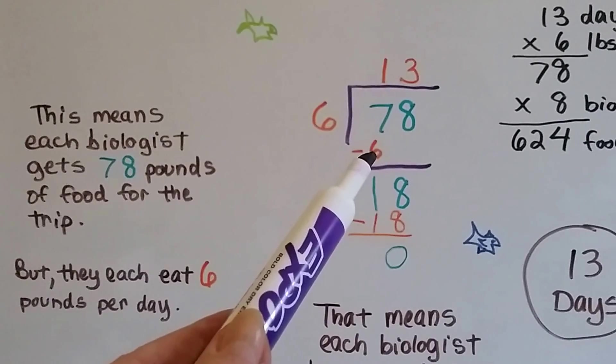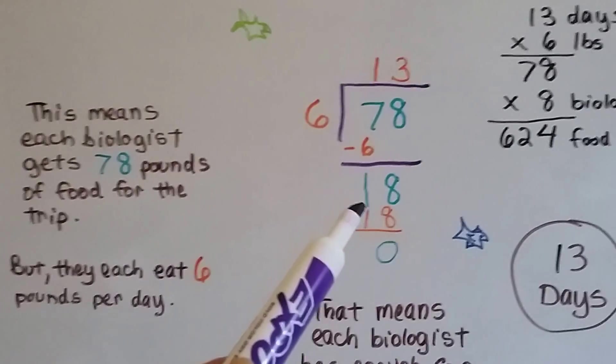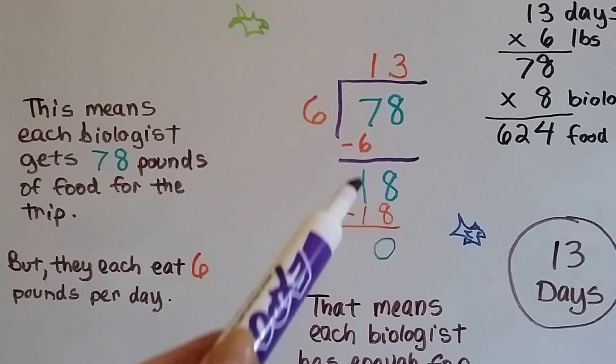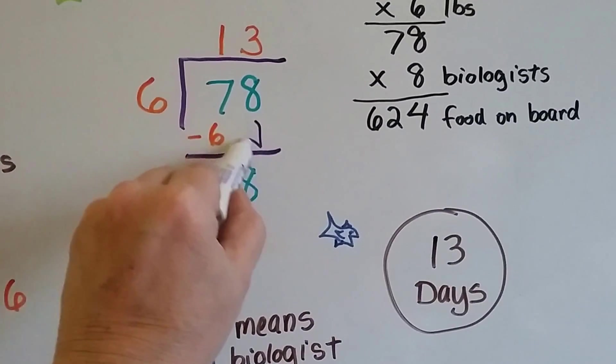And that six times one is six. We put it right directly above the seven, because that's what we're going into. We do our subtraction. We get a one, and now it's the eight's turn to come down.